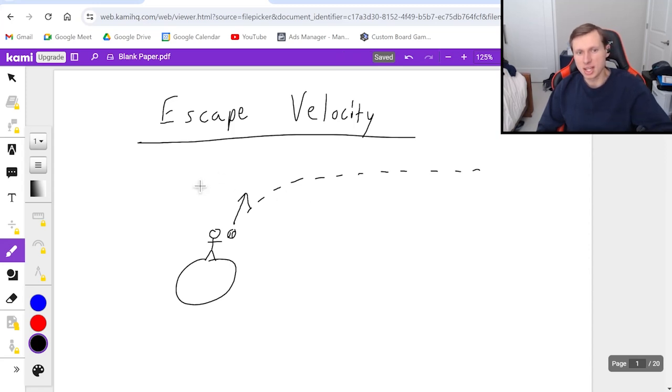The question is, how hard would you have to throw that baseball? Ignoring air resistance and a bunch of other stuff. That's a very tough question, but let me tell you the secret to answering it. The secret is going to be conservation of energy and universal gravitational energy.